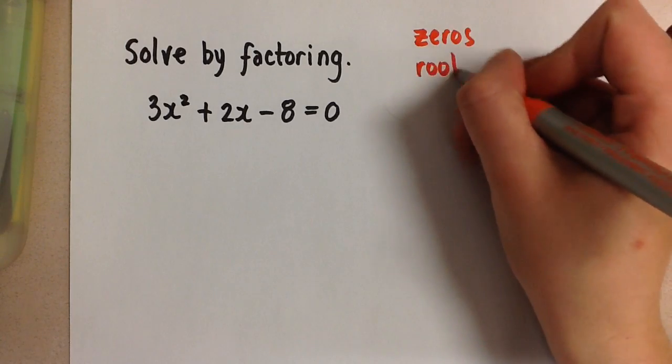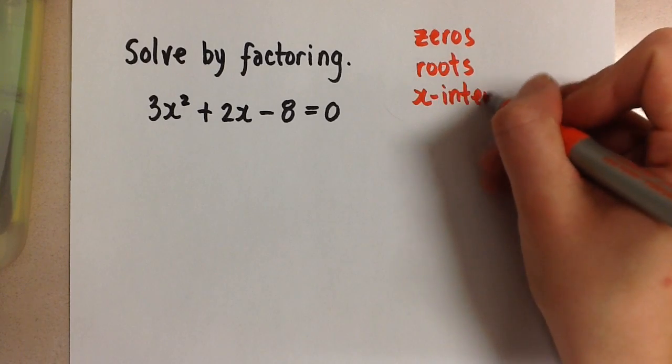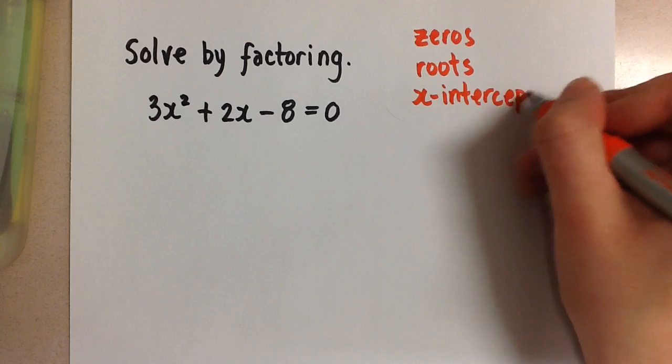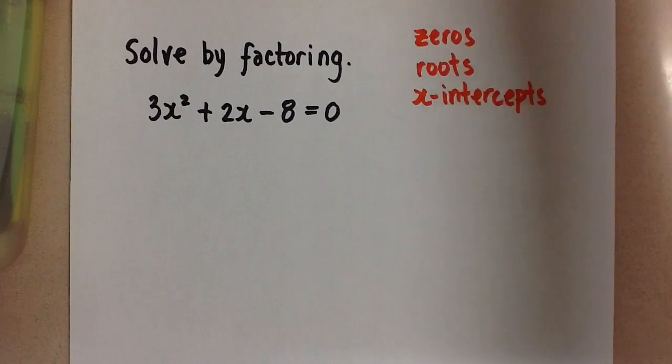Or the roots of the quadratic, or the x-intercepts. So all of these things mean the same thing. We're going to solve for x here when the equation is equal to 0 on one side.